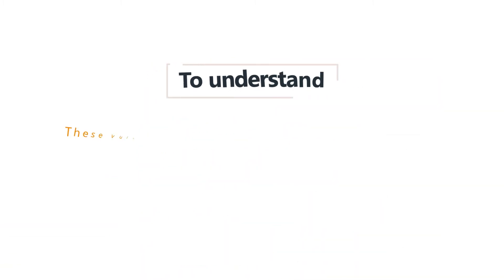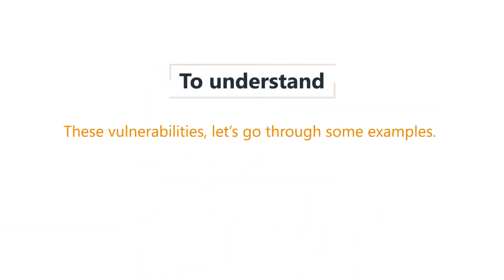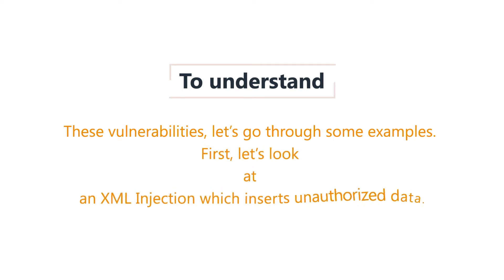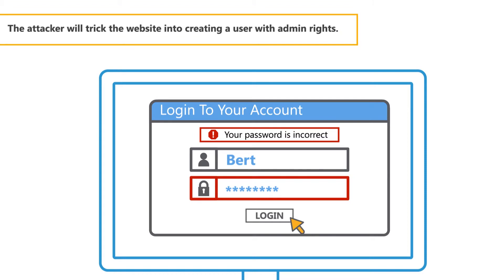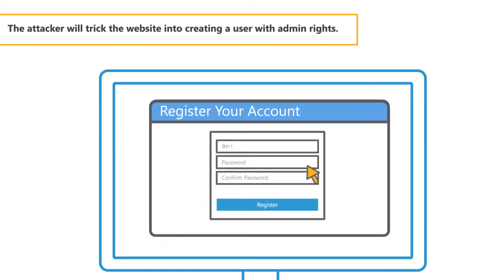To understand these vulnerabilities, let's go through some examples. First, let's look at an XML injection which inserts unauthorised data. Here, we have a website with an XML database containing user information. The attacker will trick the website into creating a user with admin rights.